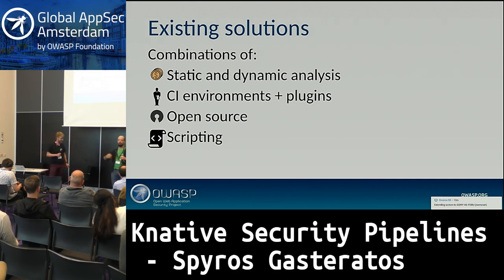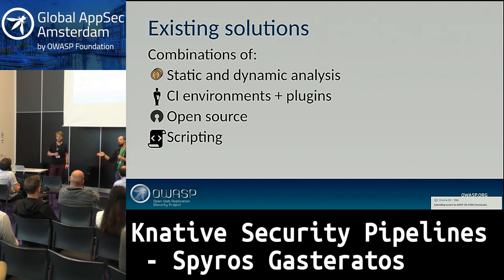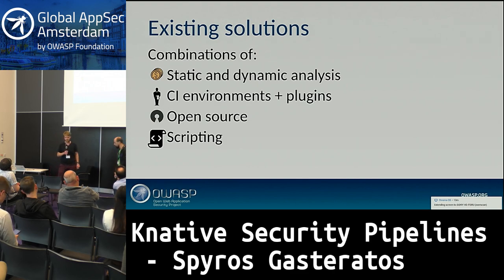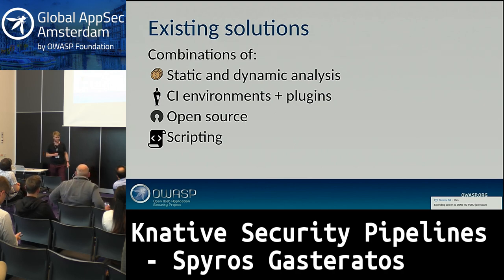Scripting to glue everything together — or say things like: if this piece of code is Python, just run the Python pipeline; if this is Kubernetes, just run some container scanning. A problem we're seeing with a lot of existing tooling is that they often make a lot of assumptions. They assume you use GitHub — we don't. They assume you use CircleCI or Travis — we don't.